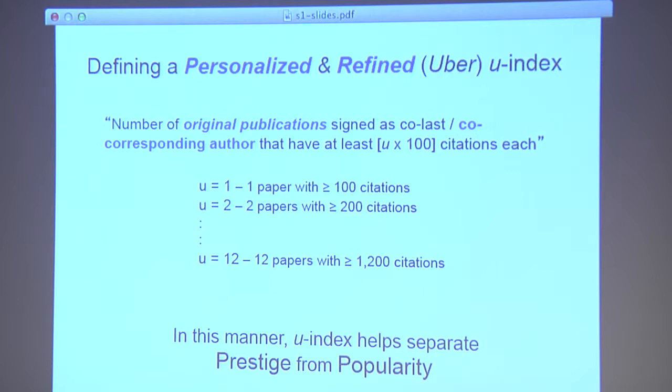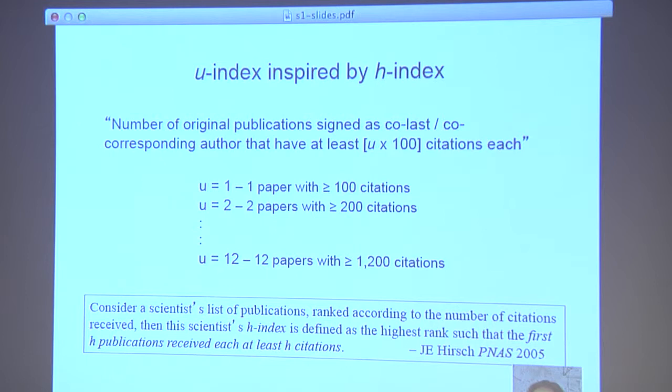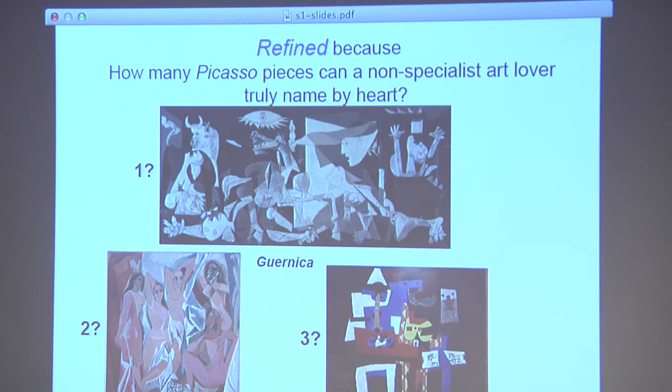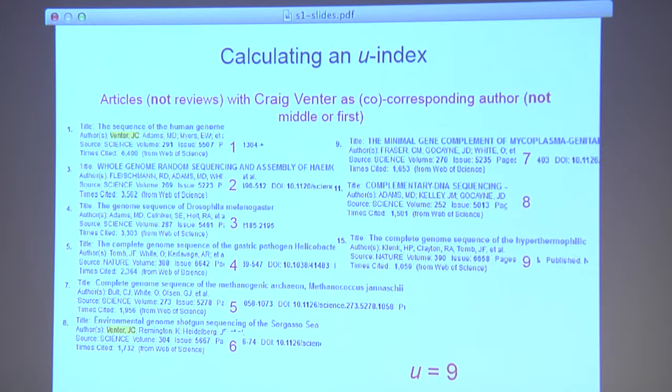Here's our definition of the Uber index, or U index. It's the number of original papers signed as co-corresponding author that have at least 100 citations each. In this way it distinguishes prestige from popularity. It's based on the H index, but it's also refined — it has a very small number, a single integer, not out to three significant digits like the impact factor. If you ask somebody how many Picassos they can name, the average person can probably only name three. Similarly, if you ask a scientist their most significant contributions, you get one, two, or three. Very few scientists can get beyond that point.